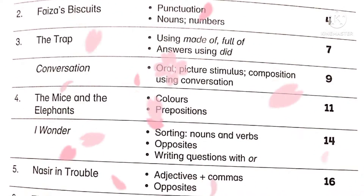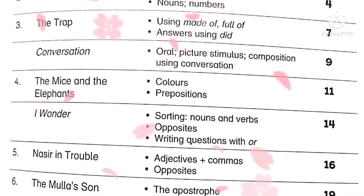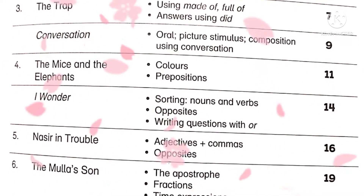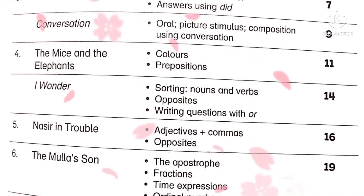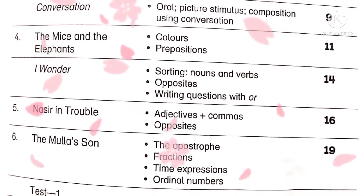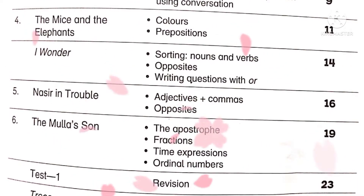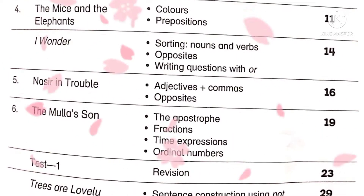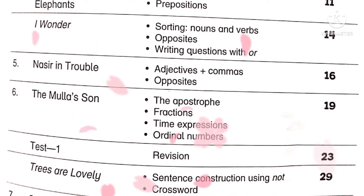Next is unit number four, 'The Mice and the Elephants.' We will discuss the concepts of colors and prepositions. After that is 'I Wonder,' where we will learn about sorting, nouns and verbs, opposites, and writing questions with 'or.'